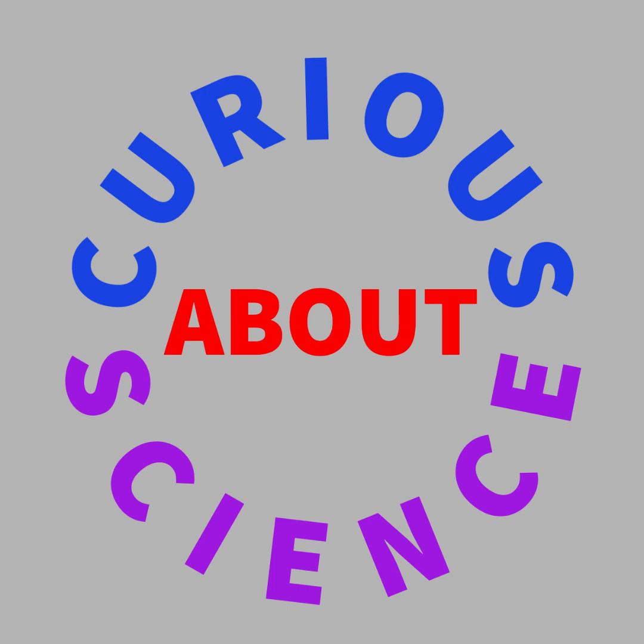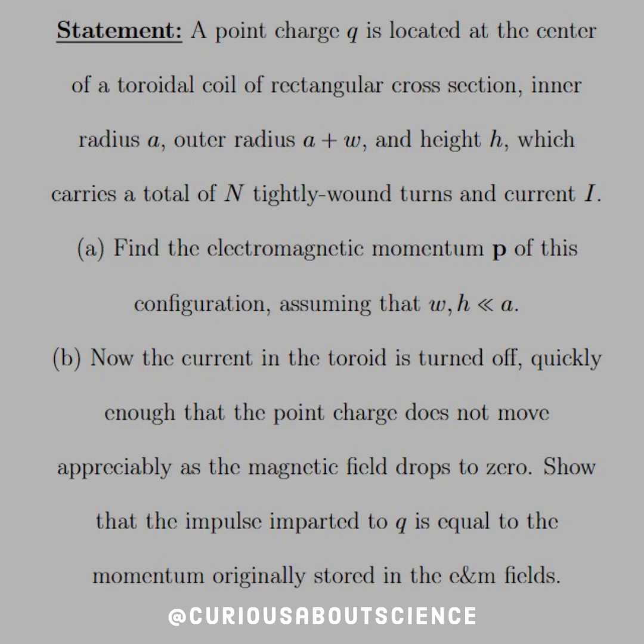All right, another long question but quick response, so I'm just going to dive in. A point charge Q is located at the center of a toroidal coil of rectangular cross-section, inner radius A, outer radius A plus W, and height H, which carries a total of N tightly wound turns and current I.